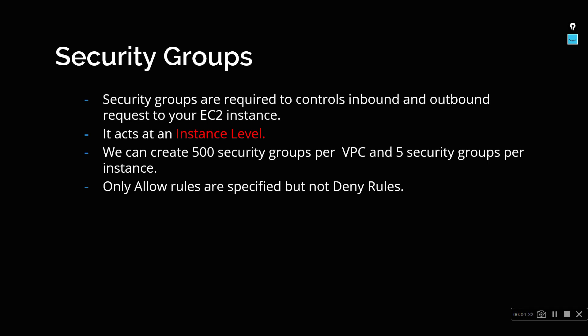Each security group can have up to 50 different rules. You can open or close HTTP, TCP, or UDP protocols and specify at what port and which IP addresses to allow access — for example, whether to open HTTP port 80 to everyone or to a specific range of IP addresses. By default, security groups deny all requests, so you have to explicitly specify what is allowed. You can only specify allow rules — you cannot specify deny rules.